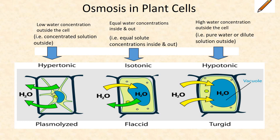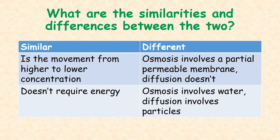In a hypotonic solution, there is high water concentration outside the cell. In this case, the cell will swell in size or become turgid. Here you can see the similarities and differences between diffusion and osmosis.